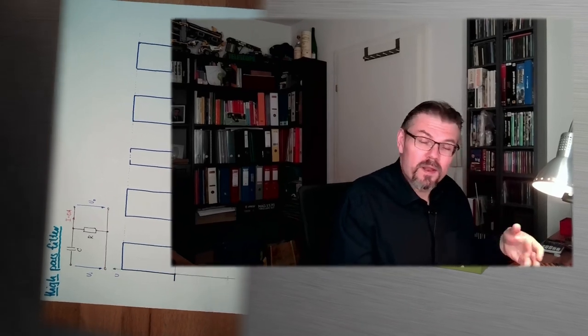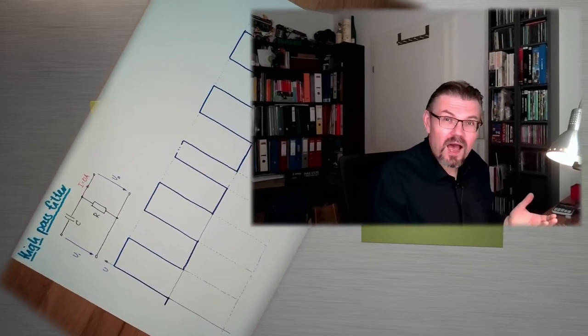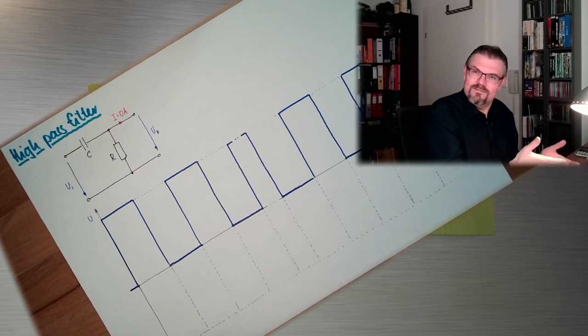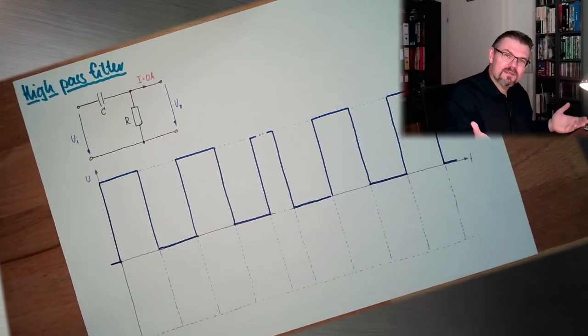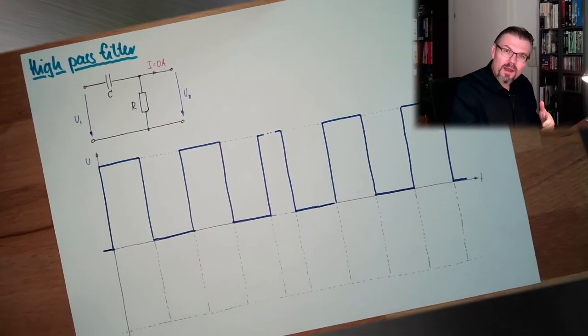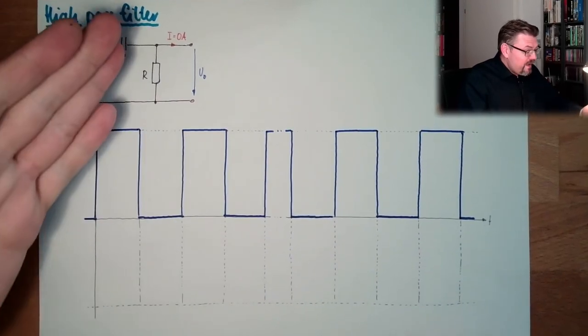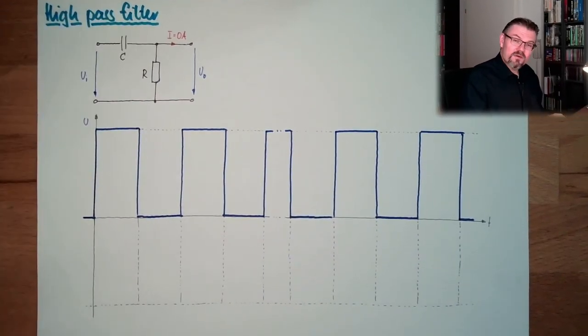Today we want to talk about the high pass filter. It's a combination of C and R — C and R just switched places. Two positions, two elements, combined one way or another. So here, this is our circuit now.